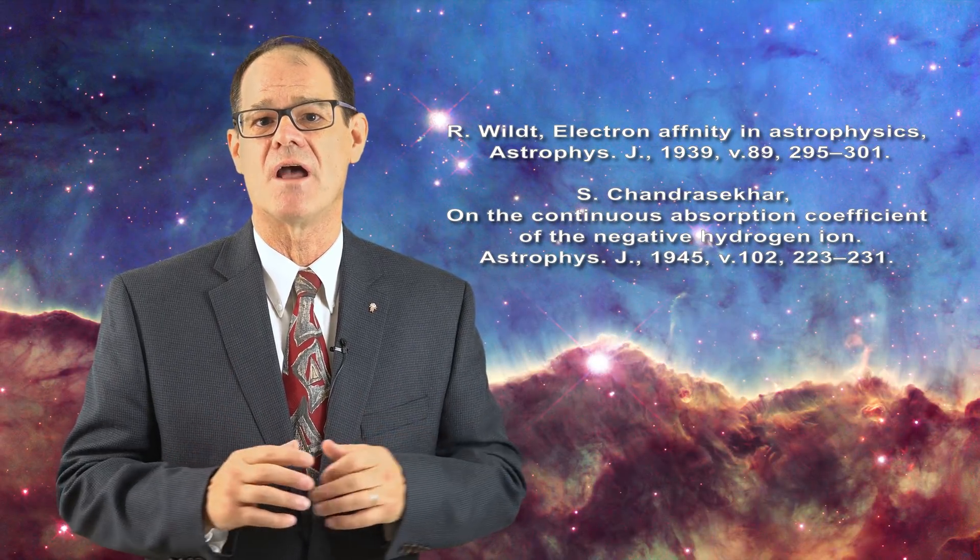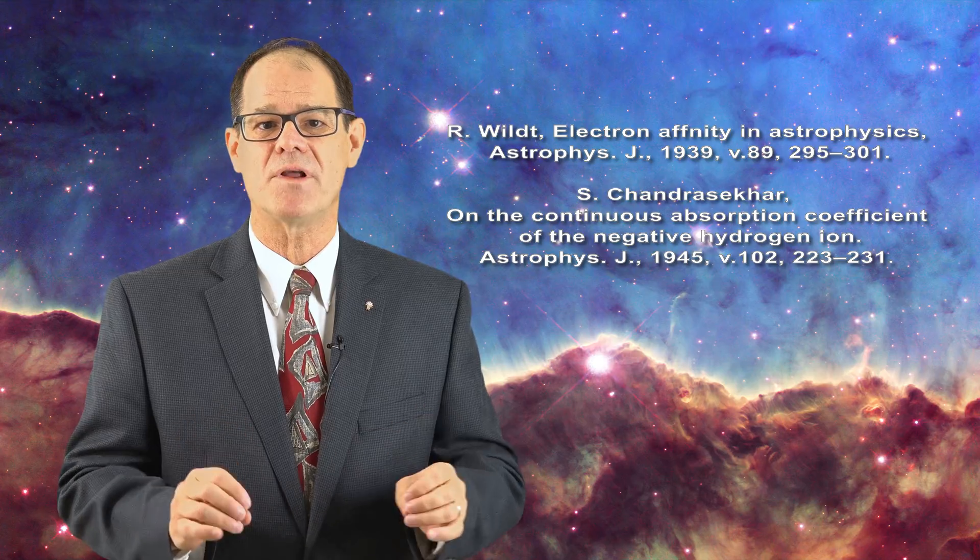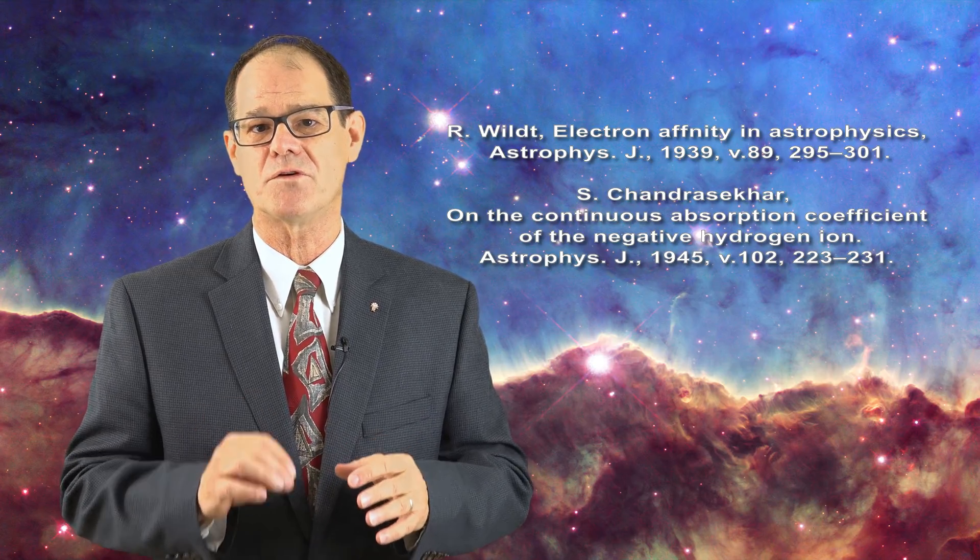Astronomers beginning with Wilt and including Chandrasekhar have tried to argue that the negative hydrogen ion, or H-, is a key component in generating the solar spectrum at the level of the photosphere. The claim is not reasonable.